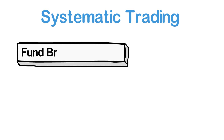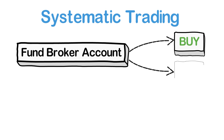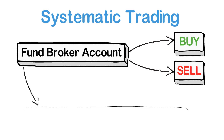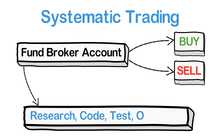First and foremost, an algorithmic approach to trading is very different from a discretionary one. You can't just open a broker and immediately start trading. You first have to code your algorithm, test, analyze and optimize it before you actually start risking any significant amount of money.